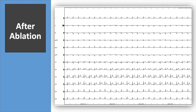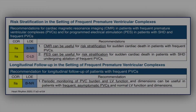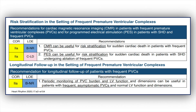The question is: is the procedure finished, or do we have to do something for risk stratification in this patient? To answer this question, we can look at the current guidelines published this year. These are recommendations for cardiac magnetic resonance imaging in patients with frequent PVCs, and also for programmed ventricular stimulation in these patients.